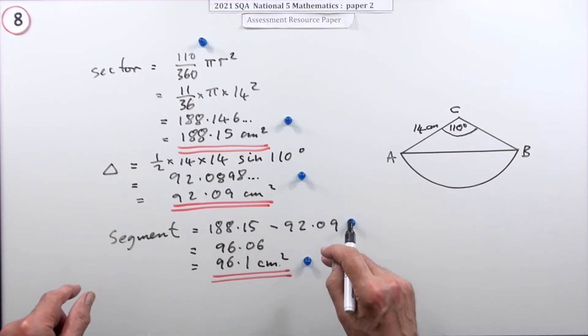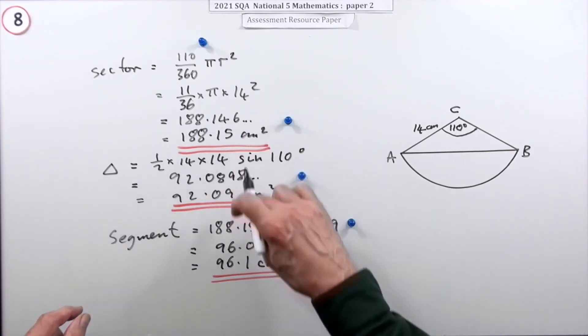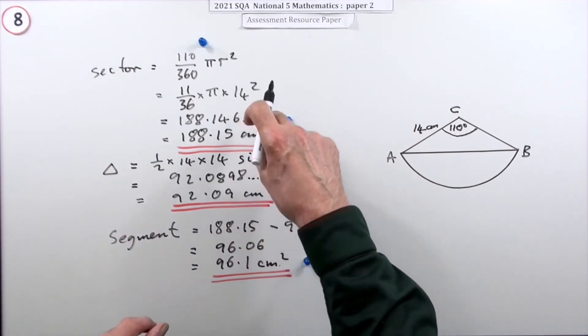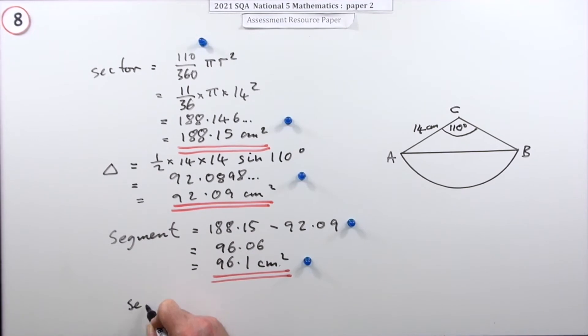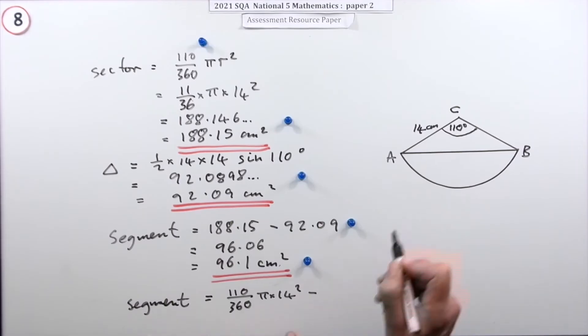You could have kept it completely accurate - you did two intermediate parts here so you lost accuracy, but you could work it out if you were brave, as an all or nothing risk. The area of the segment is the sector - 11 over 36 times pi times 14 squared - minus the triangle, which is half of 14 times 14 times sine of 110.